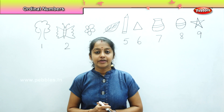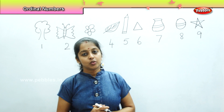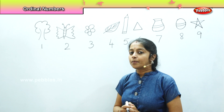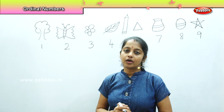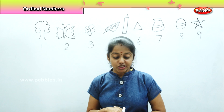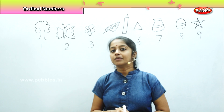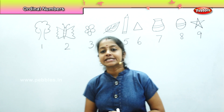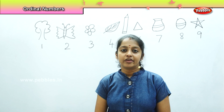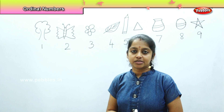Children, we have learned a lot of new concepts using numbers. Now we will do a quick recap of whatever we have learned till now, and we will understand the ordinal position. Ordinal numbers tell us the position of a particular object — in which position the particular object is placed.